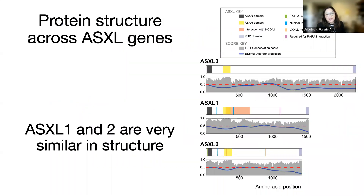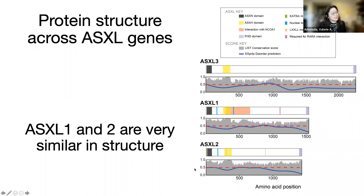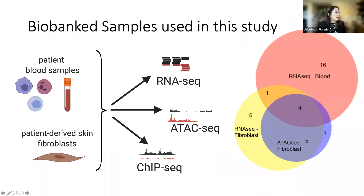When we look at ASXL across the different genes — 1, 2, and 3 — they have different phenotypes, but they are pretty similar in structure. All of the genes have an ASXN1 domain in common and also an ASXH domain. We know there's some commonality across the three, and we think there might be some common mechanisms. That's something we've been exploring, and we've started our assays to think about what we can observe from the genes where we have the most data and the most samples.